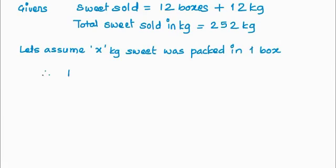Therefore, we have 12x plus 12 kg of sweet which is equal to 252. Because 12 boxes, so each box has x. So we multiply 12 by x. 12x plus 12 and that is equal to 252.